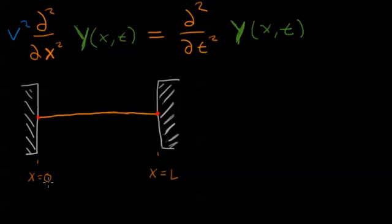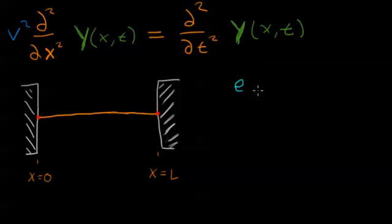For right now, let's ignore the boundary conditions and think about what general solutions we can find for this differential equation. As is often the case, a good way to start solving a differential equation is to try a solution — test a solution — an exponential that's a function of x and t. Since we know it must be a function of both x and t, we'll try an exponential of x and t.